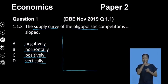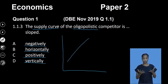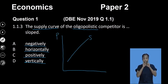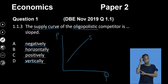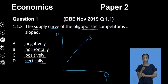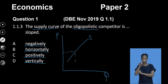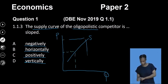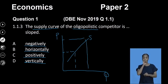This is our supply curve. As you can see boys and girls, our supply curve is positively sloped — it goes up and down. So it is positively sloped. Our answer is C — positively.